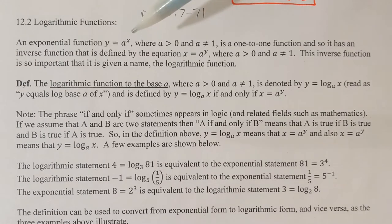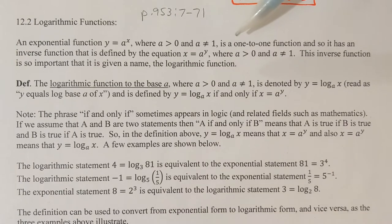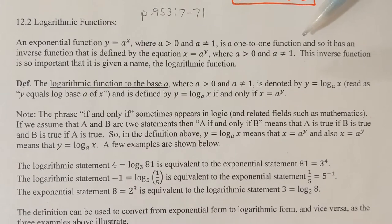An exponential function is a function of the form y = aˣ. A is the base — a has to be some positive number, but a can't be 1. Now an exponential function is a one-to-one function, and so remember what that means: it has an inverse function.